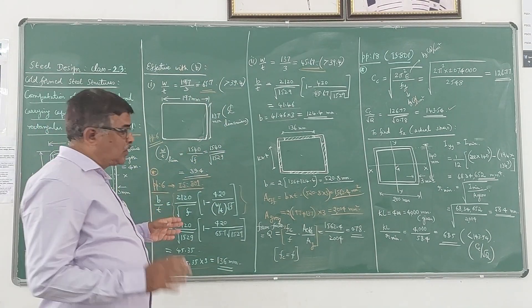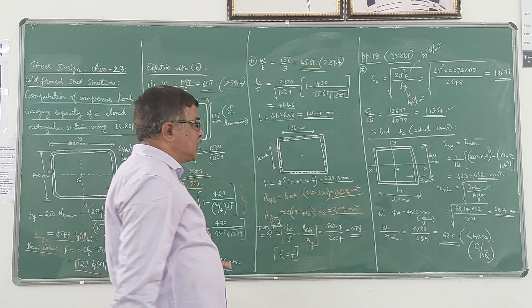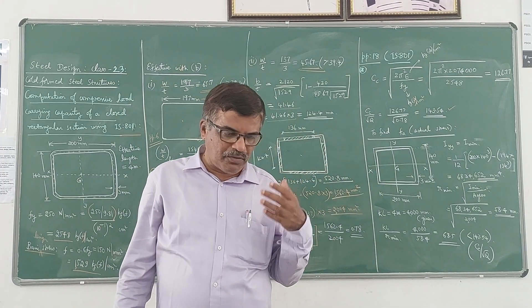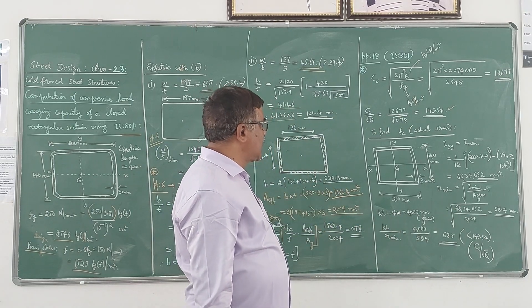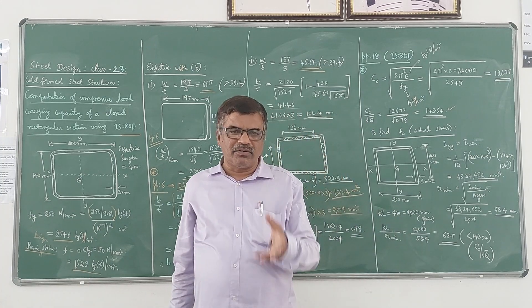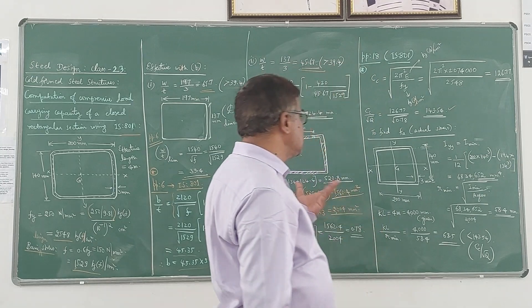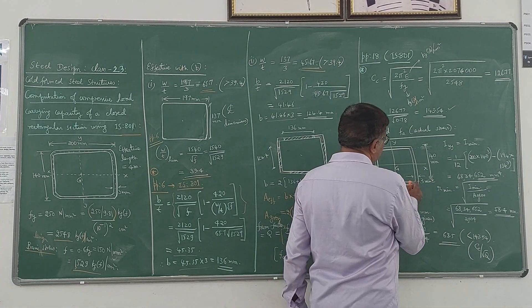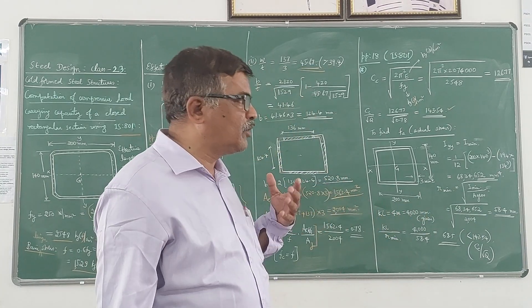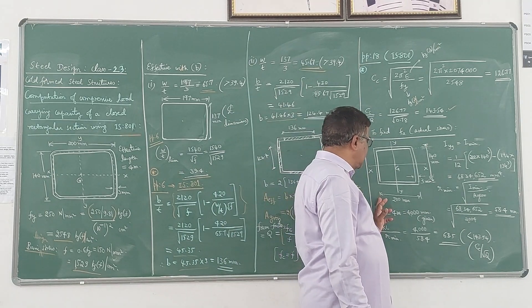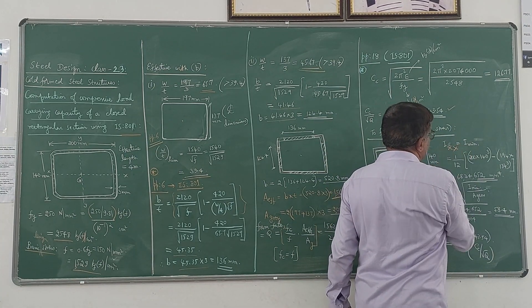Next we calculate the actual stress, which requires the minimum radius of gyration. Since this is not a standard section available in tables, we calculate it manually. For this section, B = 200mm and D = 140mm. The moment of inertia Ixx = (200 × 140³)/12 − (194 × 134³)/12. Since D (140mm) is less than B (200mm), Ixx is the minimum moment of inertia. Computing gives I_min = 68,346,52 mm⁴.